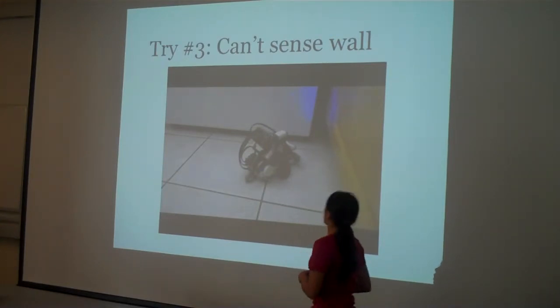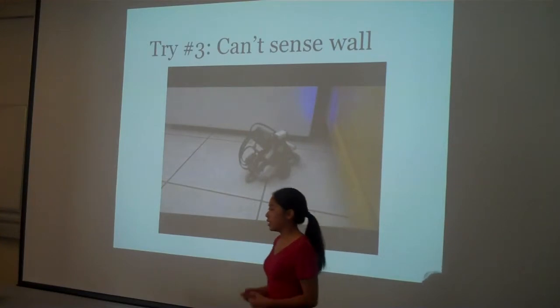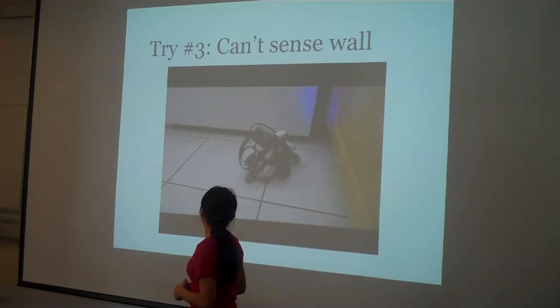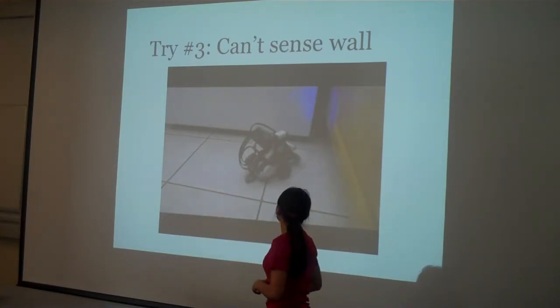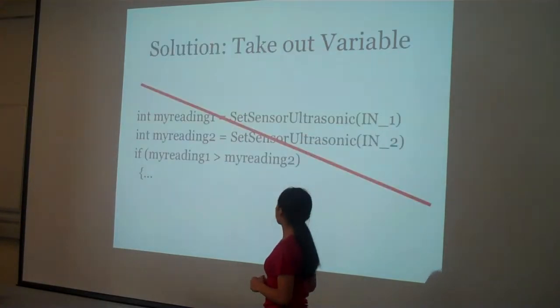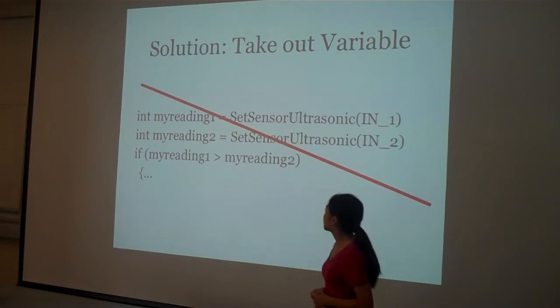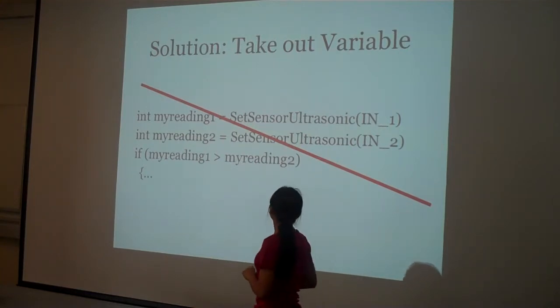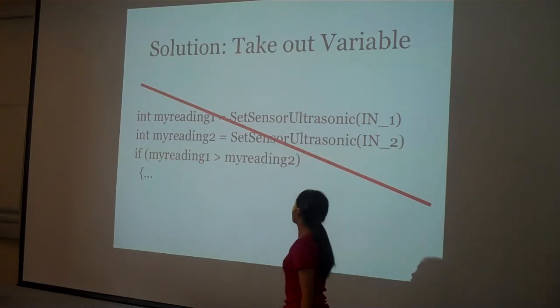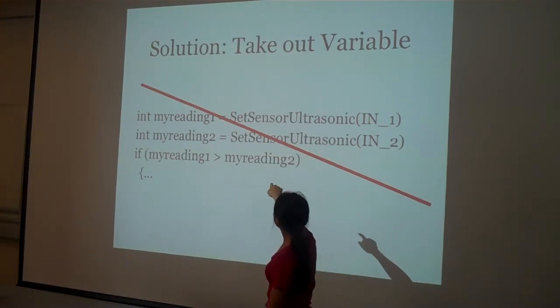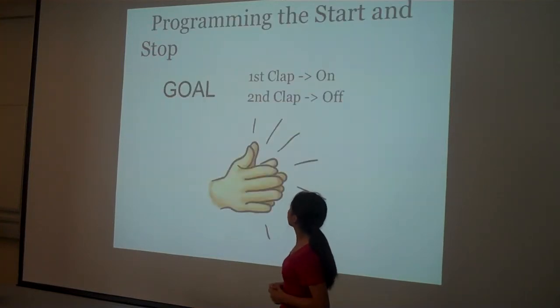And so this time it couldn't sense the walls. And I was kind of confused by this because it seemed like 90 centimeters didn't work with 90 centimeters. But what happened was that it had too many variables. And so I had to scratch this my reading thing and just stick with the set sensor ultrasonic and use that so that it would continue to work.